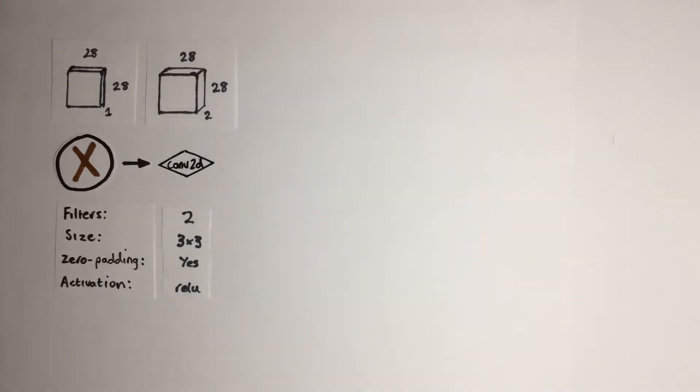This will output a 28x28x2 matrix. We can then pass that output to another convolutional layer with four filters of size 3x3 with zero padding and also passing that through the relu activation function. This will give us a 28x28x4 output.